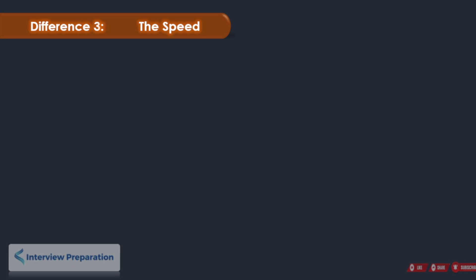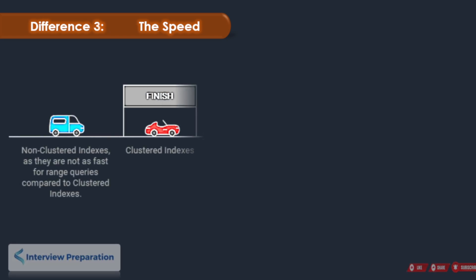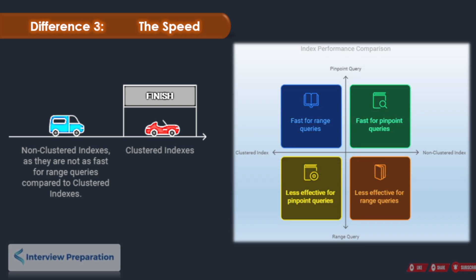Here is the third difference: speed. When it comes to finding a range of values, like all books published in 2024, clustered indexes are like a Formula One car — they're incredibly fast because the data is already organized in a specific order. Non-clustered indexes, on the other hand, are fast in some cases; they're great at finding specific things, like a book by its title. But if you need to find a bunch of books, like all those published in 2024, they might not be as quick. So, if you're often looking for a range of values, a clustered index is your choice. But if you're always searching for specific items, a non-clustered index is the way to go.